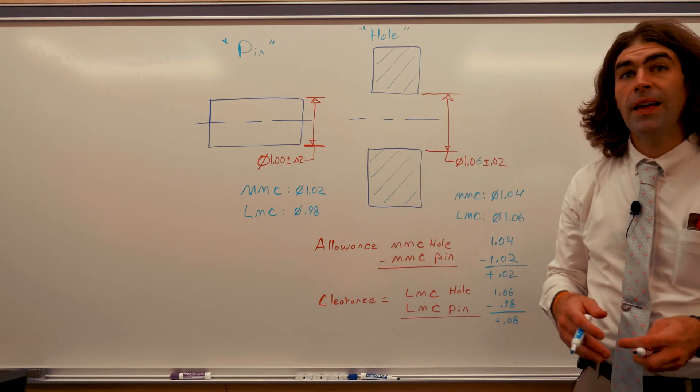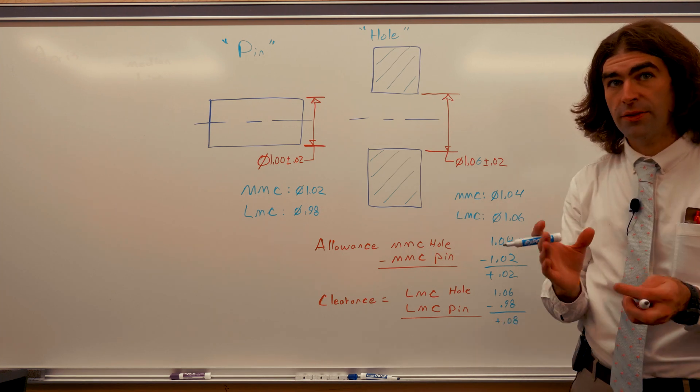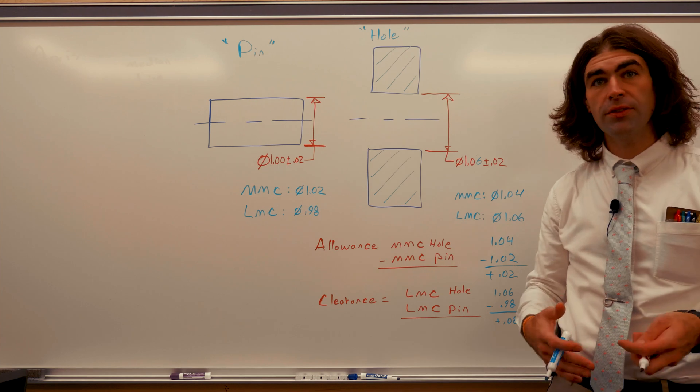So again, the allowance is the difference between the MMC of the hole and the MMC of the pin. So that's the minimum room there is for movement.